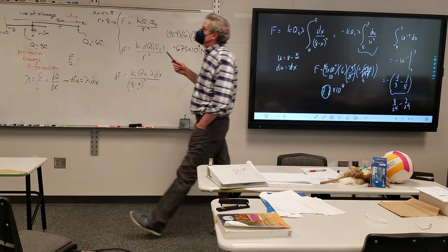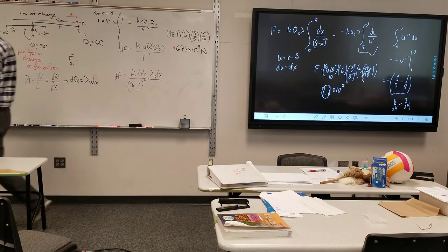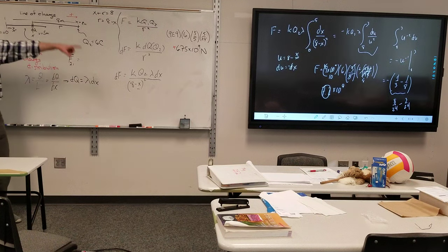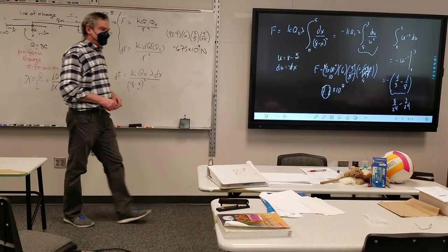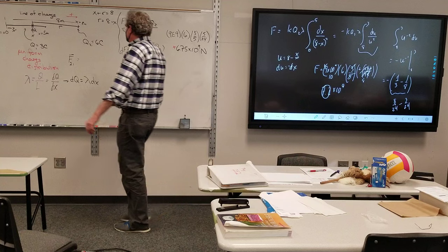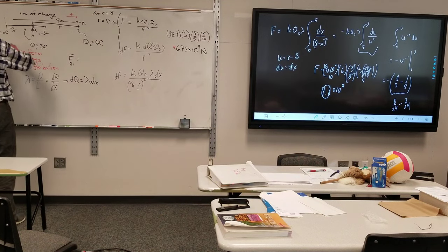The general process is when I have a distribution of charge, if I don't have a shortcut for it, and there's not one for this, I have to create a dQ and then work it through there, try to get it in terms of a single variable. So now, let's do three-dimensional.